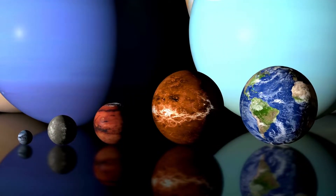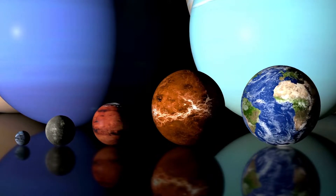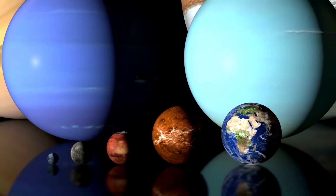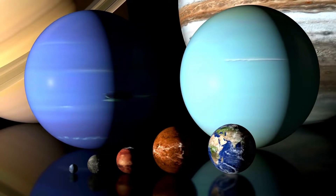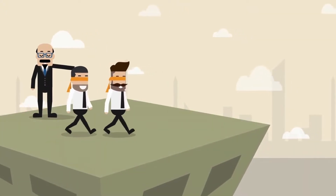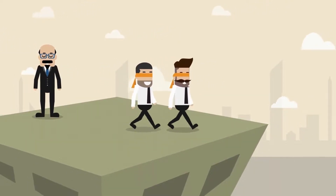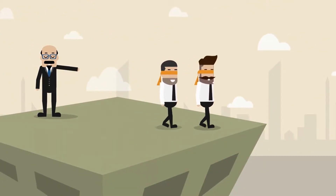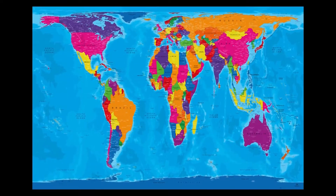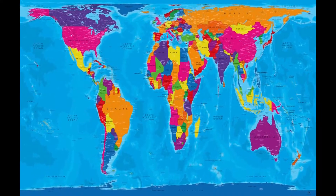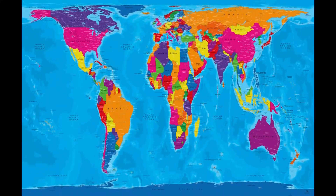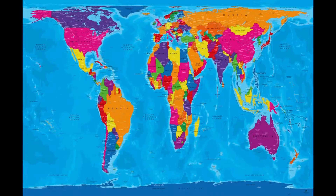The Gall-Peters projection shows accurate landmass without greatly exaggerating the size of any continent — proving that size really does matter. However, it is not widely used because it is inaccurate in terms of directions compared to the Mercator projection, which shrunk countries along the equator to provide accurate directional readings. Another issue is that certain places appear stretched horizontally near the poles and vertically near the equator.